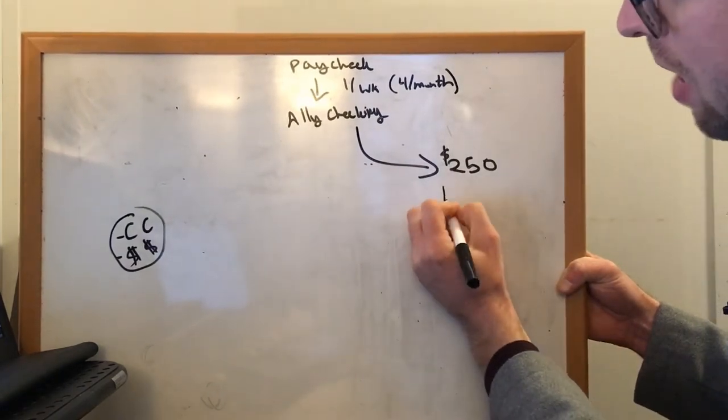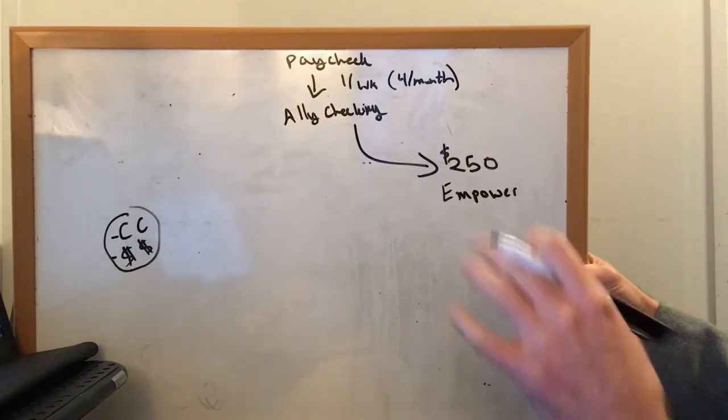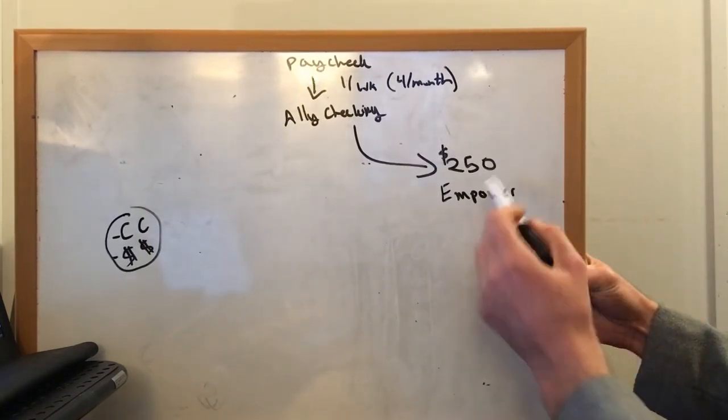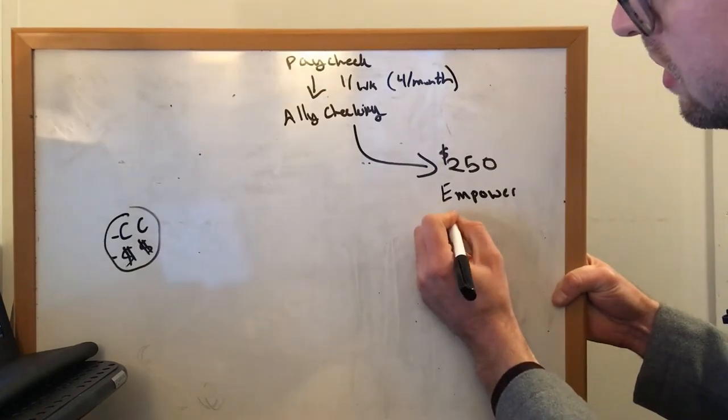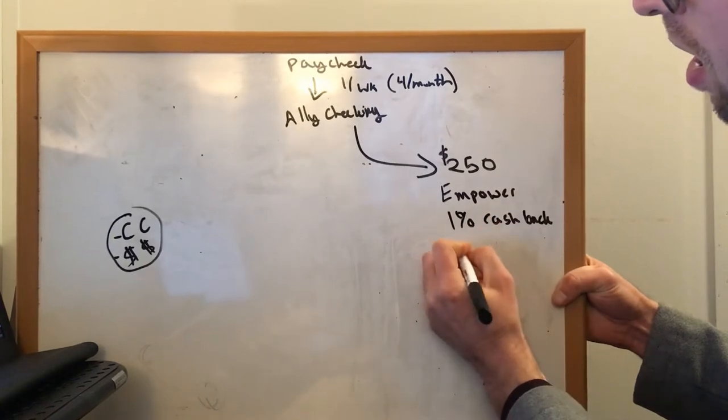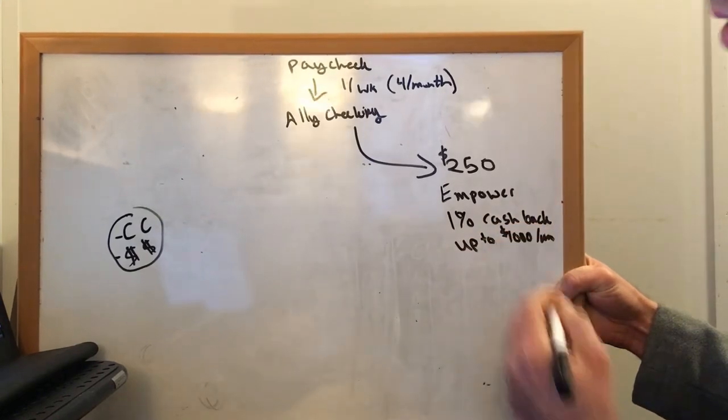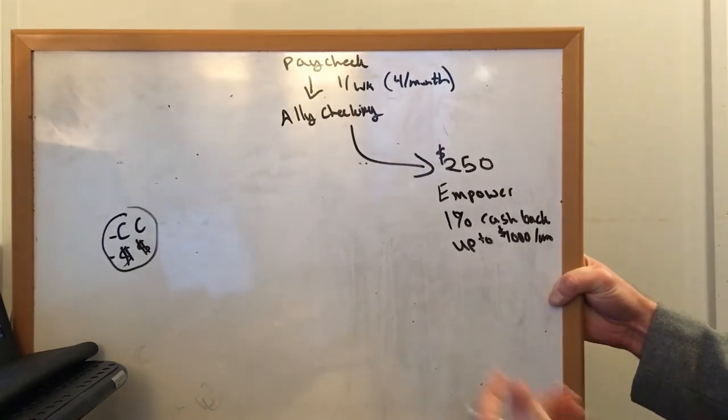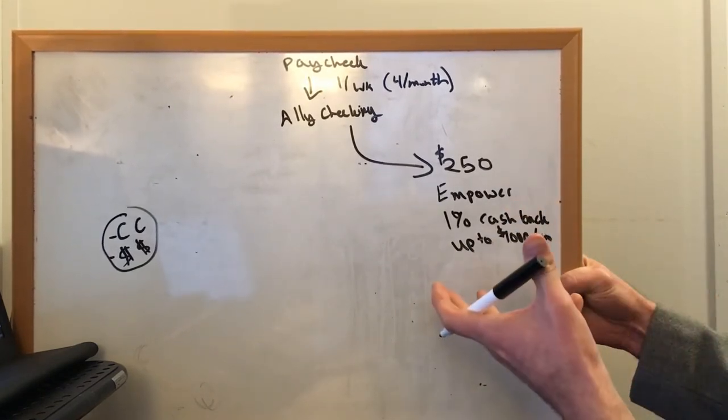It's a checking account by Empower and it's this startup bank. They don't have any branches or anything. It's just a startup. And the nice thing about this is this is my spending money, $250 a week, a thousand dollars a month. The great thing about Empower is they do a 1% cash back up to a thousand dollars per month. So I spend my allowance, if you will, my spending money, in a month and I get up to $10 back. So it's almost like I have credit card rewards there, but it's not a credit card. So I can only spend a thousand dollars. It's great.